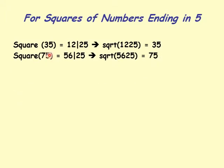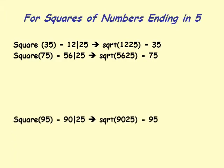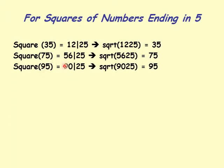For 75: square is 5625, so square root of 5625 is 75. We notice 25 on the right, and 56 on the left equals 7 times 8, giving 7 on the left. For 95: square of 95 is 9025, so square root of 9025 is 95.